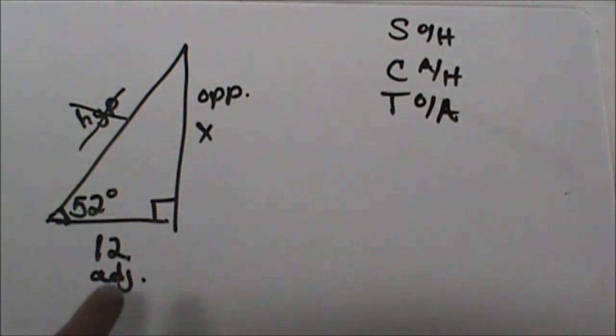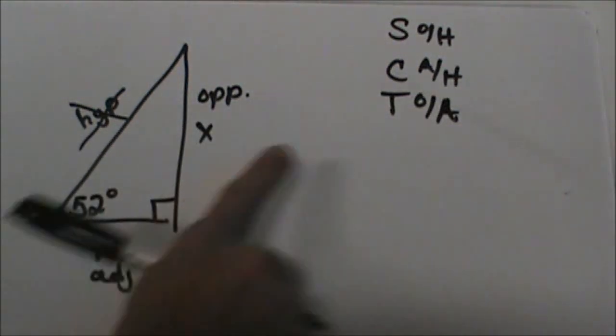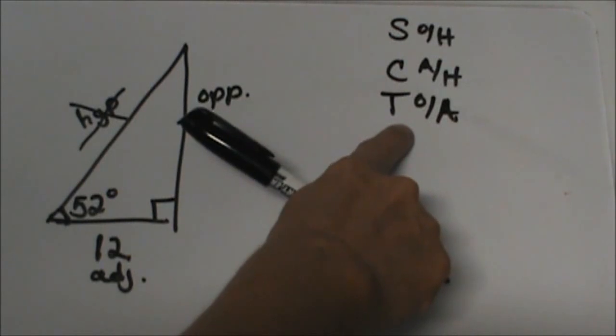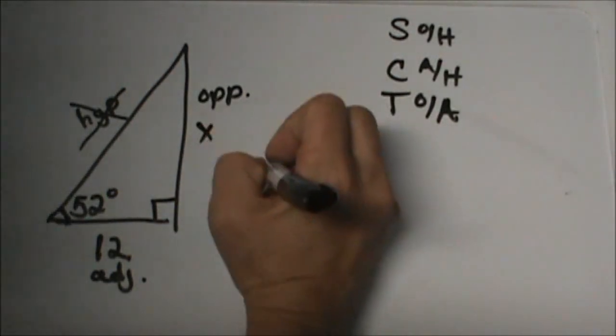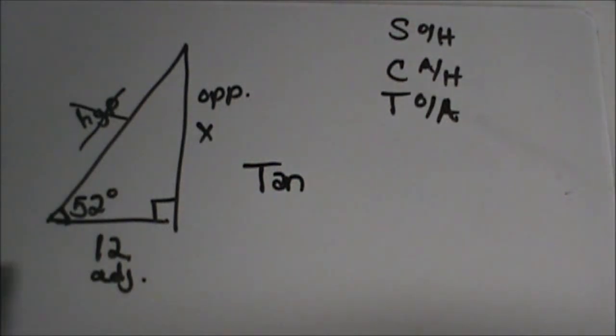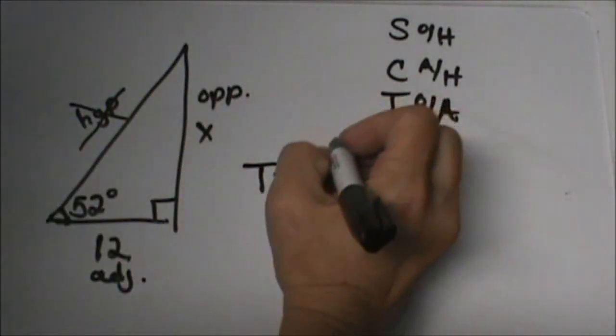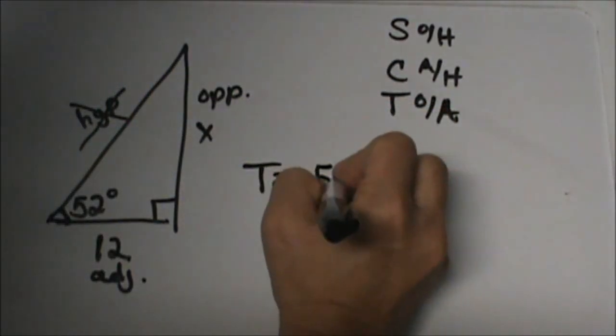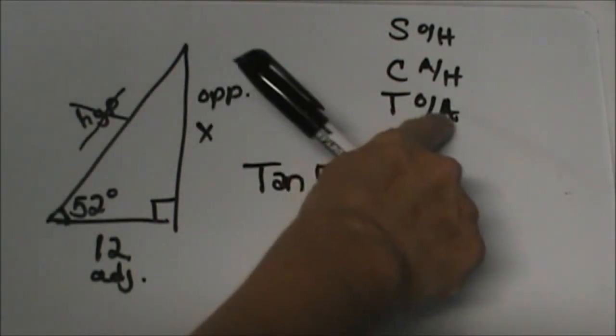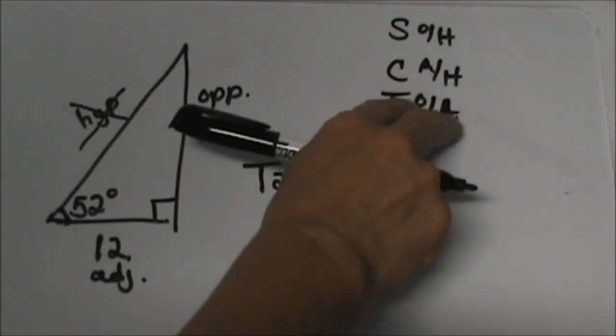Which one uses the opposite side and the adjacent side? That is our tangent. That is how we decide which trig function to use. Let's set up the tangent of theta. Theta in this case is our reference angle, so we are taking the tangent of 52 degrees. That is equal to the opposite side over the adjacent side.